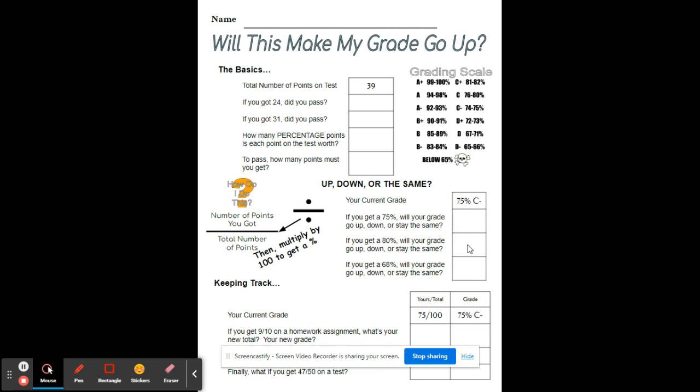For this, here's our average, right? So if you have a 75% average, that's what this says, and then you get another 75%, if you get the exact same thing that your average already is, it's going to stay exactly the same. If you get above it, what do you think that will do to your middle, your average? Will that make it go up or down? And then here, will that make it go up or down?